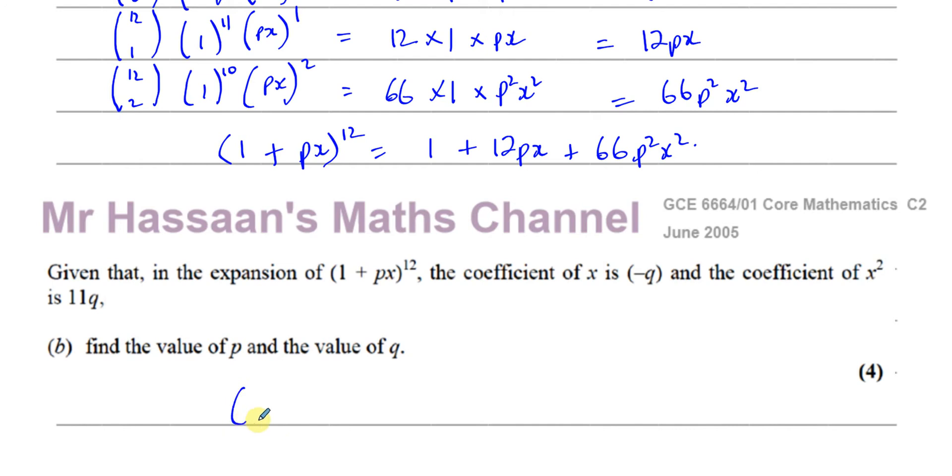So they're saying basically that if we expand the same thing in terms of Q, you're going to get 1 plus, you'll have minus Q as the X term. So it will be minus Qx, coefficient of X will be minus Q.